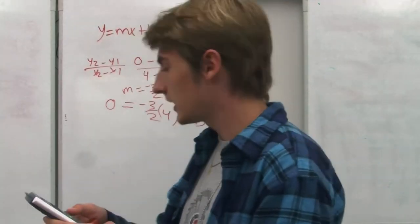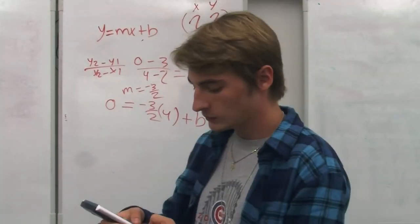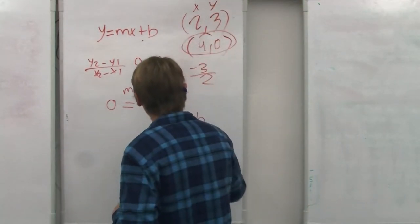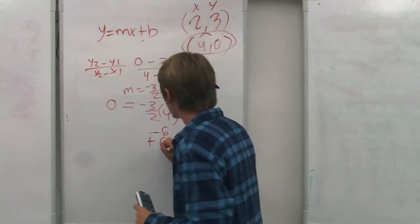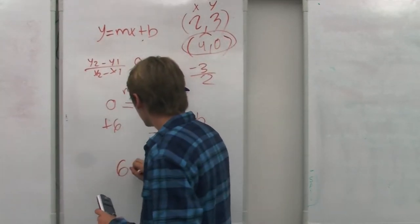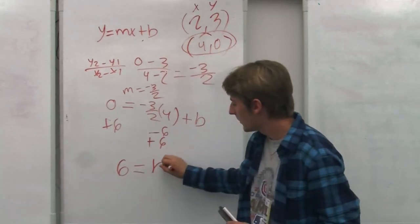On your calculator, you can take negative 3 halves times it by 4. You get negative 6. And then, you're going to add that to both sides. So, 6 equals b.